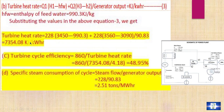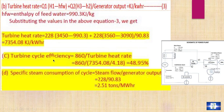The third question is turbine cycle efficiency. The turbine cycle efficiency equals 860 divided by the turbine heat rate in kcal/kWh. So: 860 / (7354.08 / 4.18), converting kJ to kcal. The turbine cycle efficiency is 48.95%.